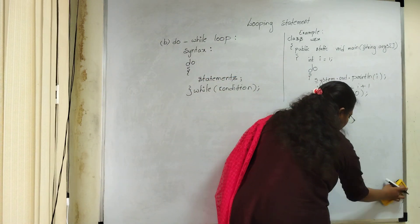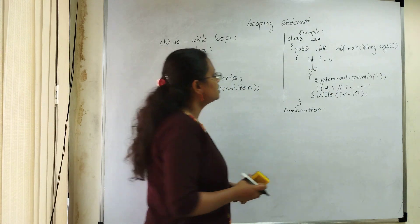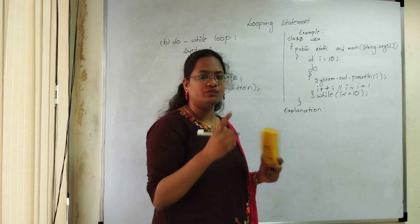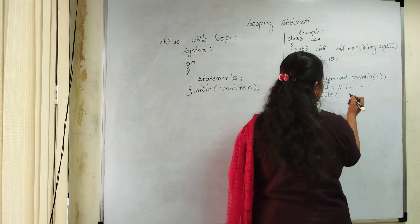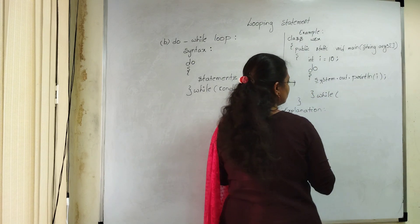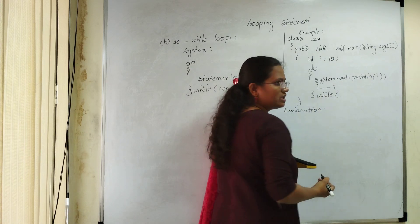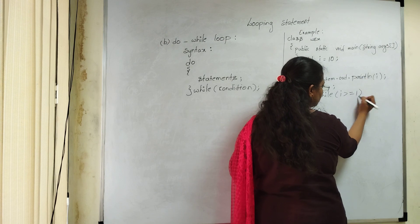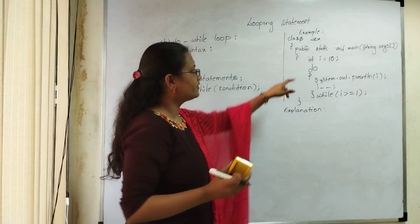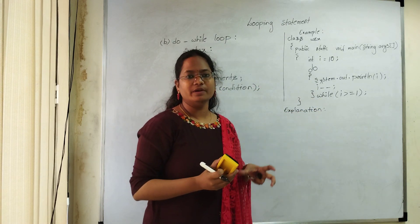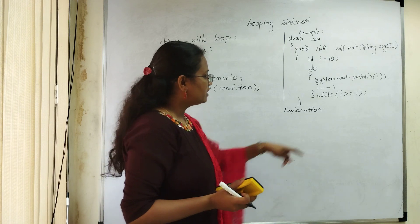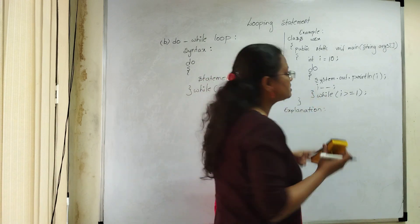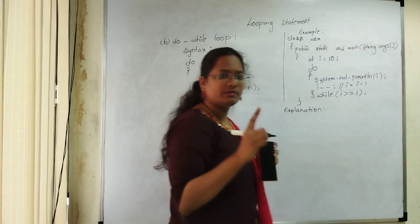Now I want to show how we can perform decrementation. To print 10 to 1, change the i value to 10. Write the condition as i >= 1 and use the decrement operator i--. i-- means i = i - 1, so every iteration it decrements by 1. This is the setup to print numbers from 10 to 1.